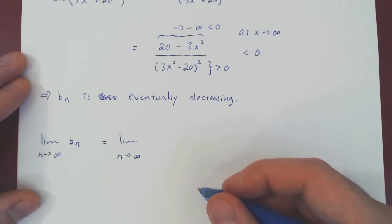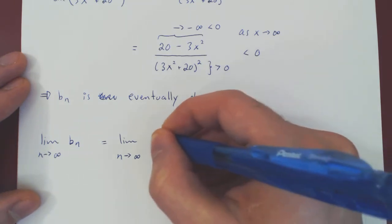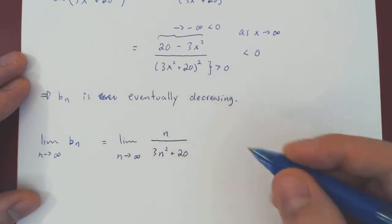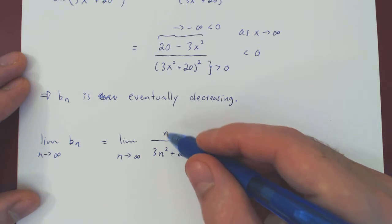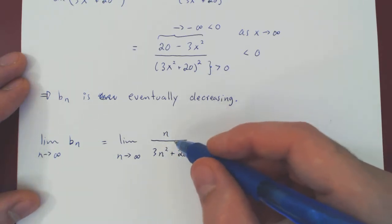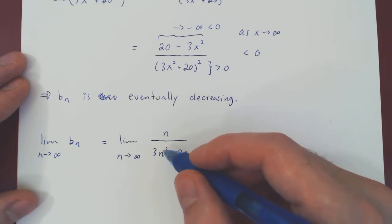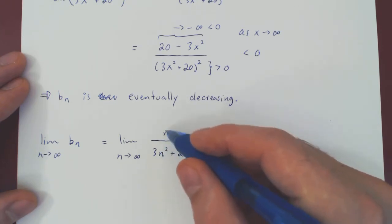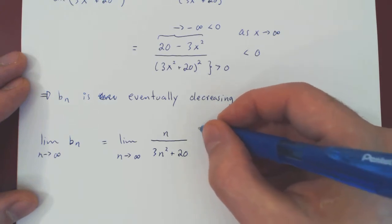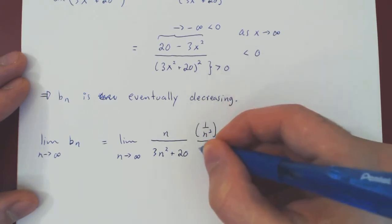Well, bn, if you recall, is simply n over 3n squared plus 20. And now here, of course, you have an infinity over infinity case, so you could think of using L'Hôpital's rule, but we can do much simpler. The largest power of n is n squared on the bottom and on top, so let's look at 1 over n squared over 1 over n squared.